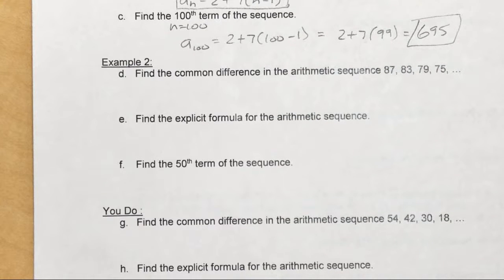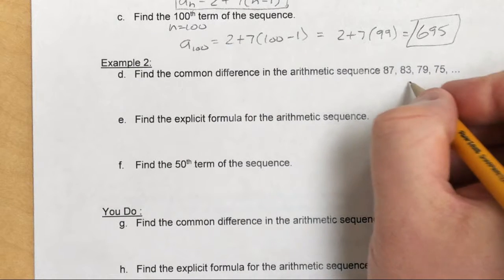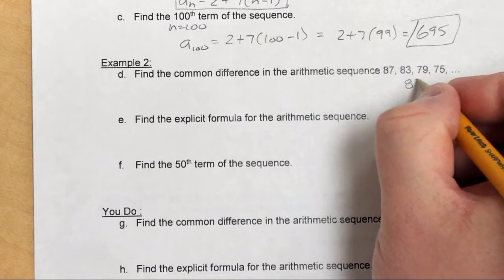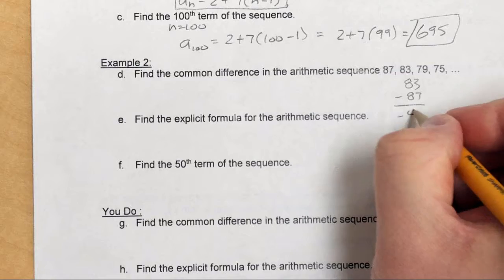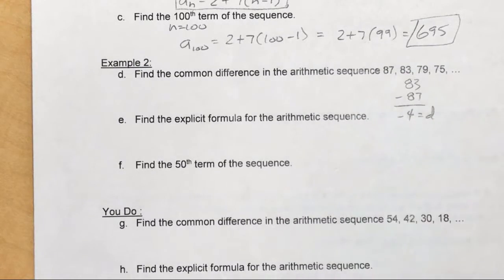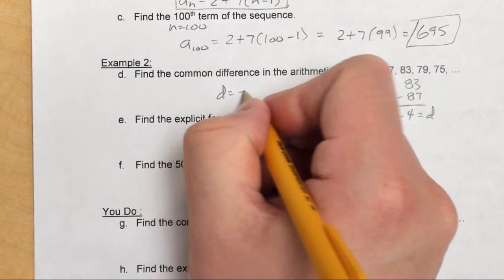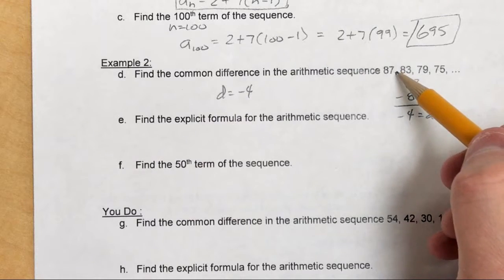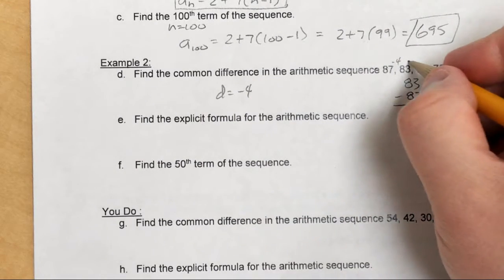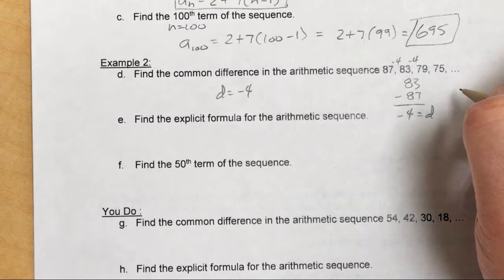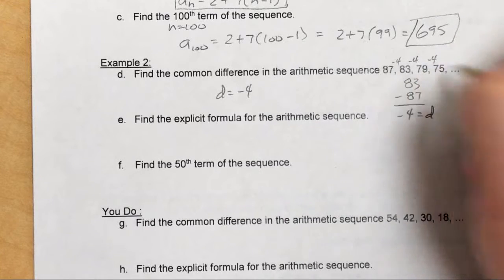Find the common difference in the arithmetic sequence of 87, 83, 79, 75. Taking the second term minus the first term: 83 minus 87 gives a common difference of negative 4. So if I take 87 and subtract 4, I get 83; 83 minus 4 is 79; 79 minus 4 is 75.